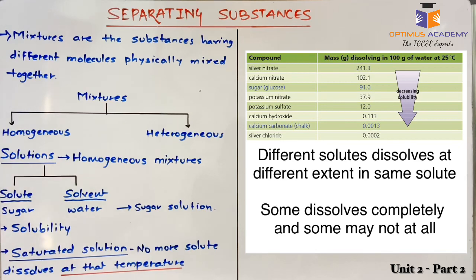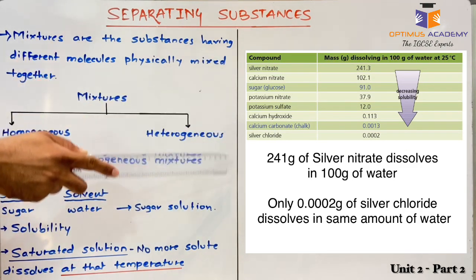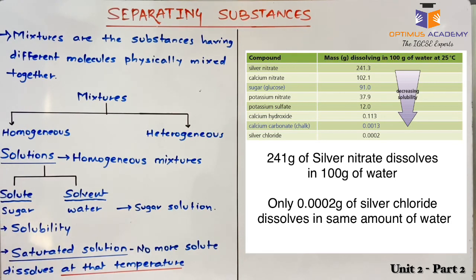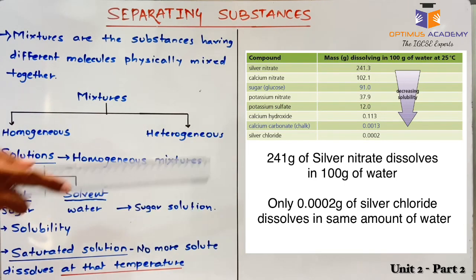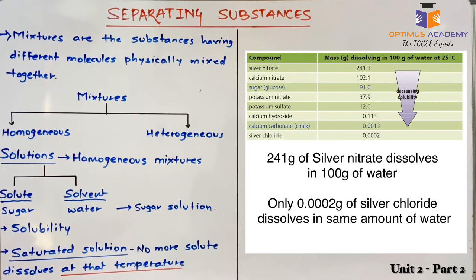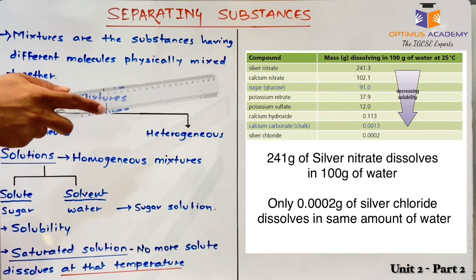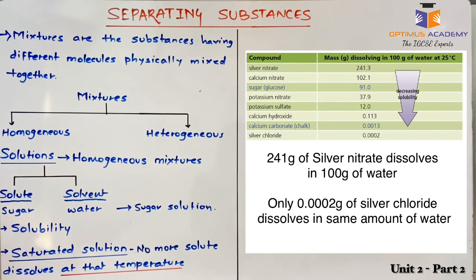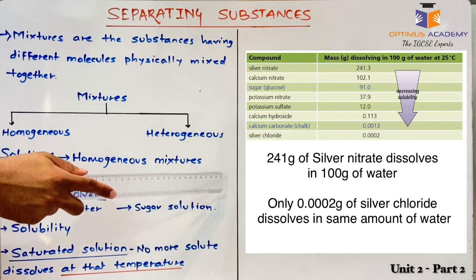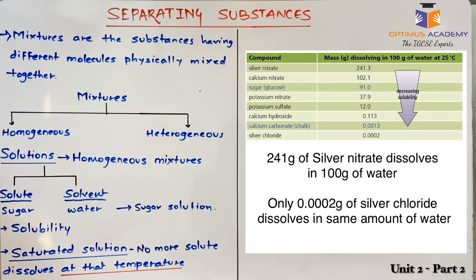Some solute particles dissolve to a greater extent in solution, whereas some solute particles may sparingly dissolve or do not dissolve at all. For our reference, we can see the solubility chart given here, which mentions how different substances dissolve in 100 grams of water. We can see that silver nitrate easily dissolves in water as the extent of solubility is maximum, but another compound of silver — silver chloride — does not dissolve in water. So solubility differs from solute to solute.